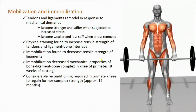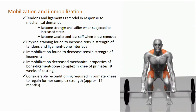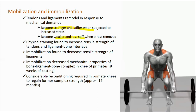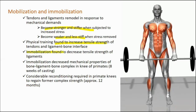The next factor is mobilization and immobilization. Tendons and ligaments remodel in response to mechanical demands, becoming stronger and stiffer when subjected to increased stress. For example, when you exercise, your tendons and ligaments become stiffer. But with less mobility in daily life, tendons and ligaments will get weaker. Physical training is found to increase tensile strength — the more exercise you do, the more the tensile strength of tendons and ligaments will increase.